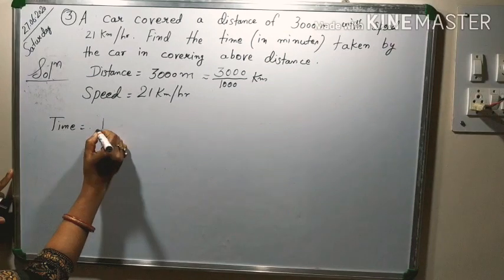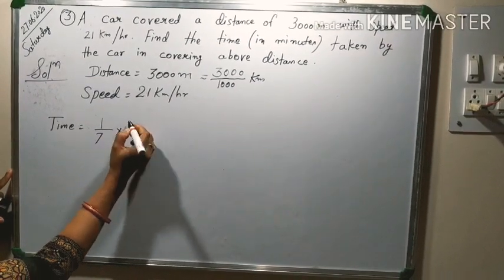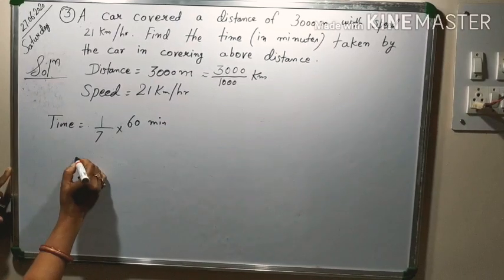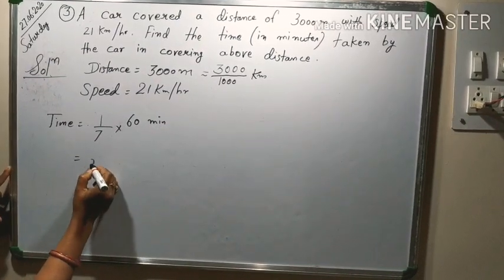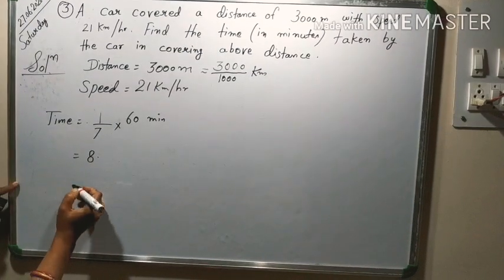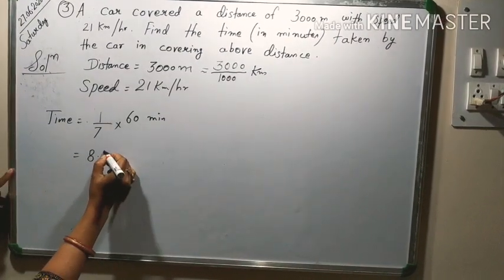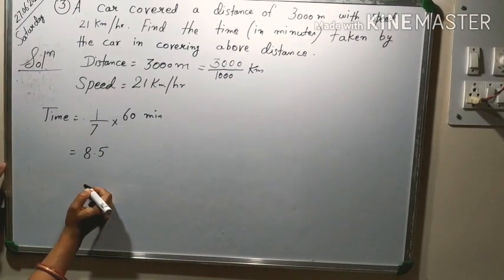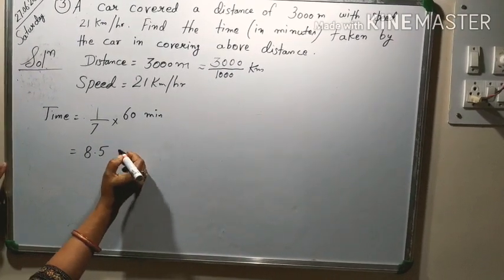So 1 by 7 into, we multiply it by 60. 7 into 56, 4. So 7, 35, 12 will come 8.5 minutes.